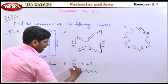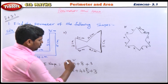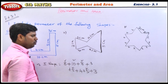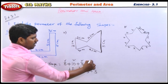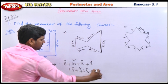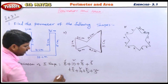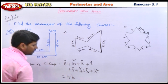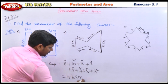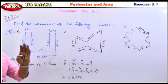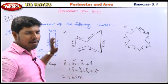8 plus 10 plus 8 plus 3 plus 5 plus 4 plus 5 plus 3. That gives us: 10 plus 10 is 20, 8 plus 8 is 16, 36 plus 4 is 40, 40 plus 3 is 43, 43 plus 3 is 46. So the perimeter of the first shape is 46.